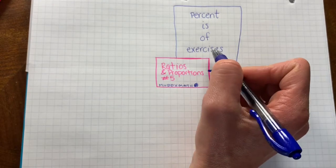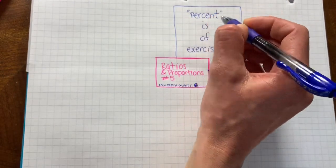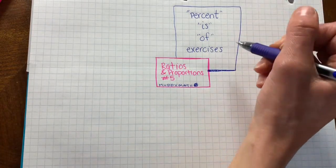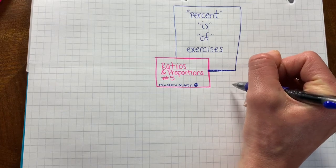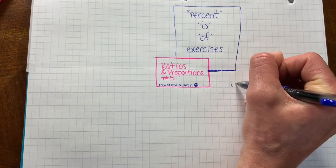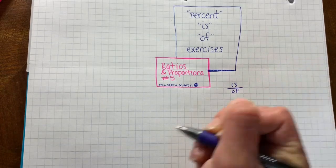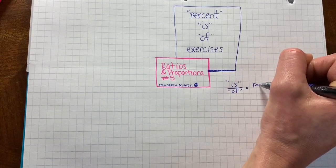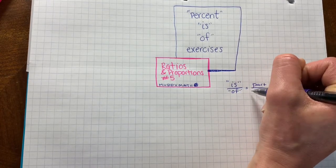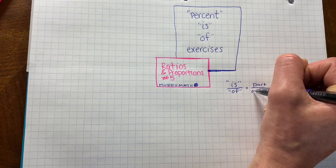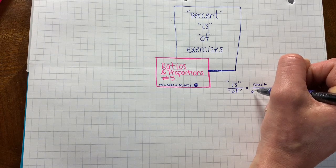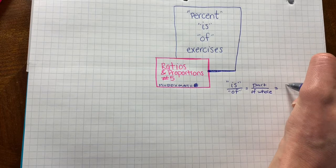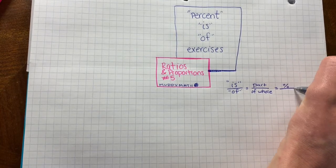Let's take a look at exercises involving the words percent, is, and of. In general, when you are solving an exercise using these three words, you can rely on the structure of a proportion: is over of relates to the part over the whole.